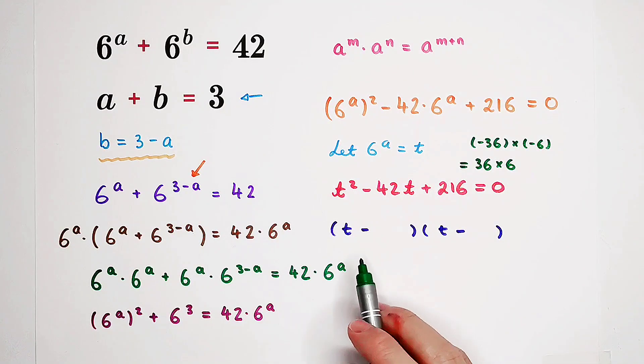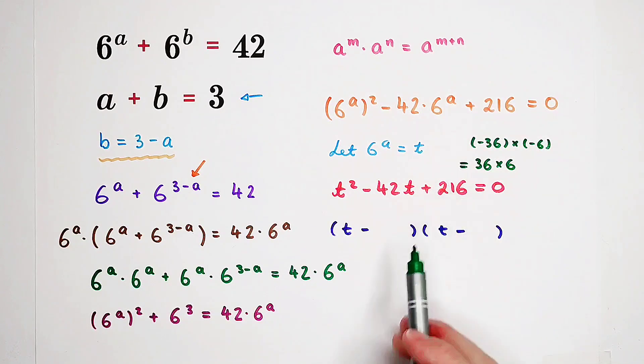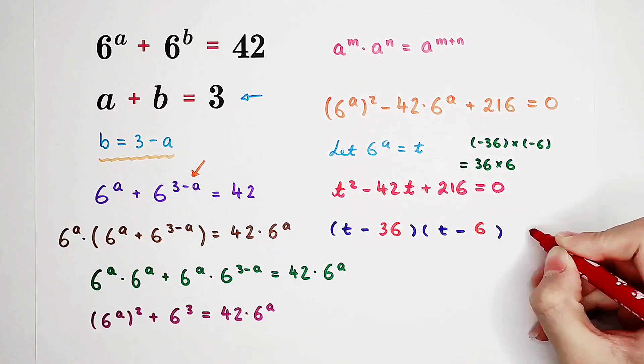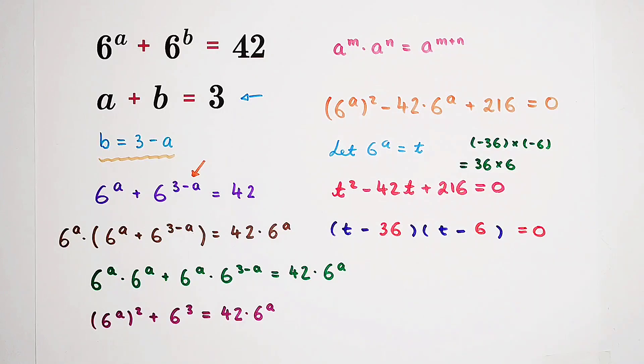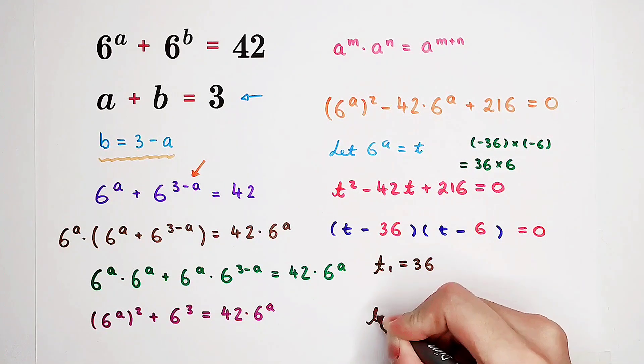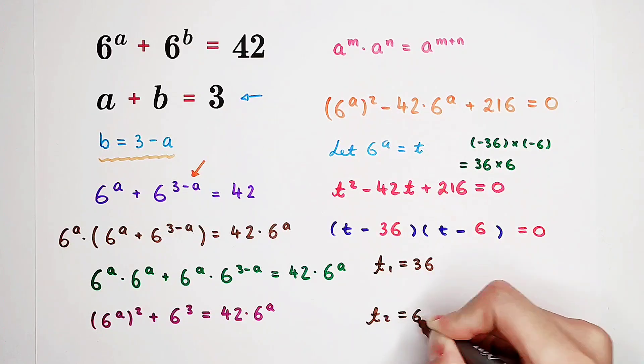So, now, here is T minus 36. Here is T minus 6. So, T1 is 36. T2 is 6.